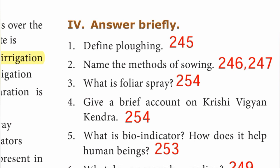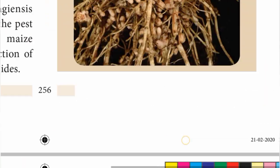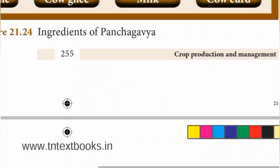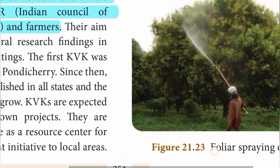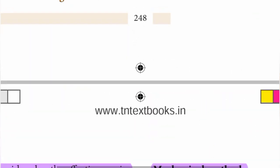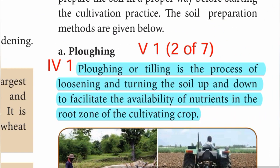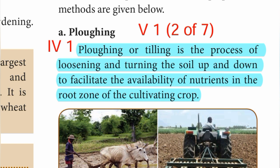Question Roman number 4: answer briefly. First one: define ploughing, page number 245. Ploughing or tilling is the process of loosening and turning the soil up and down to facilitate the availability of nutrients in the root zone of the cultivating crop.